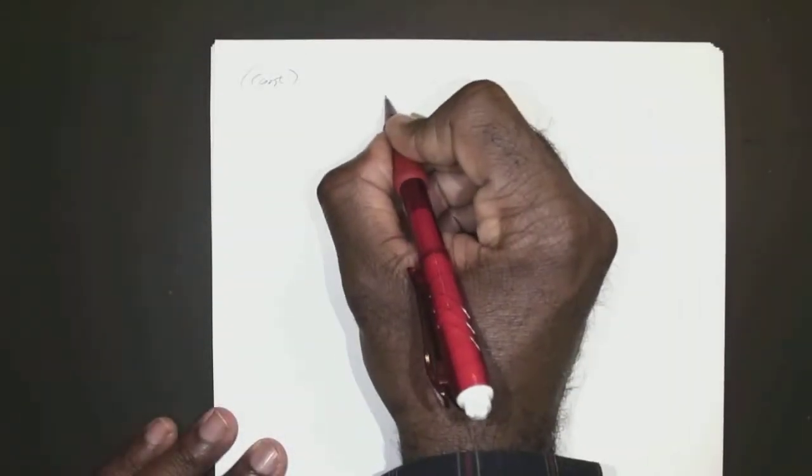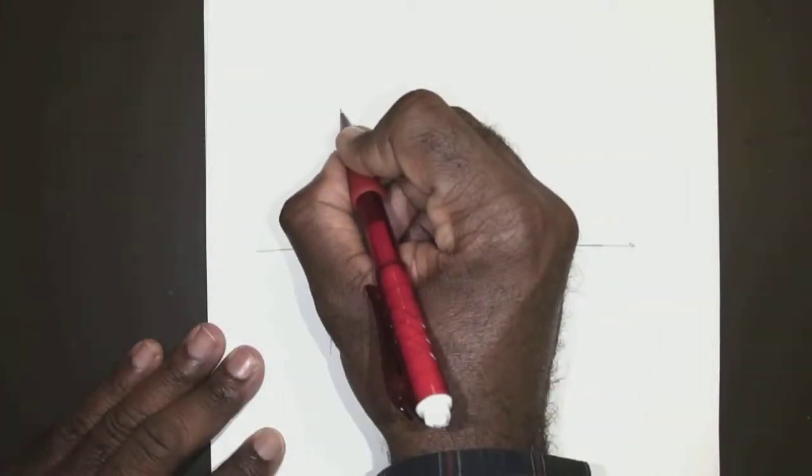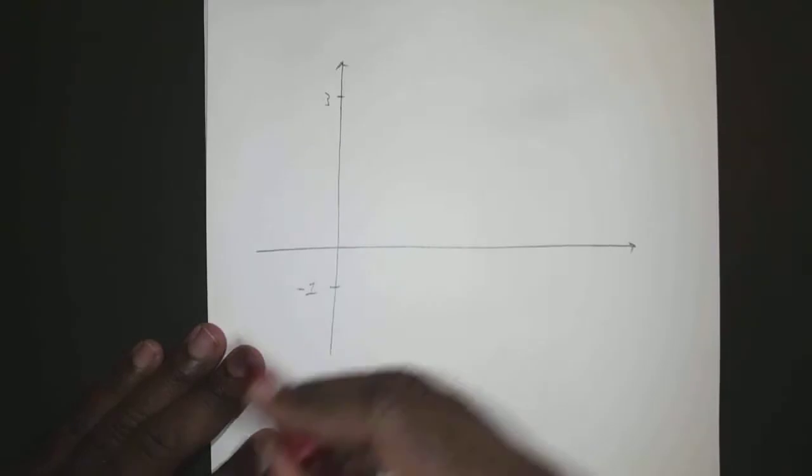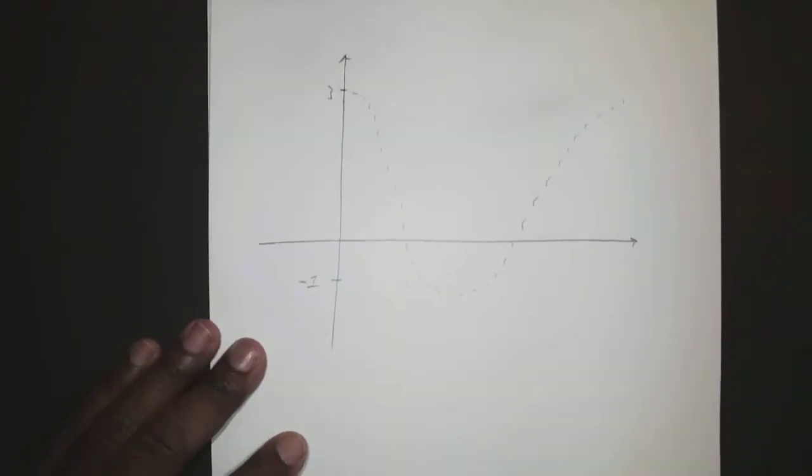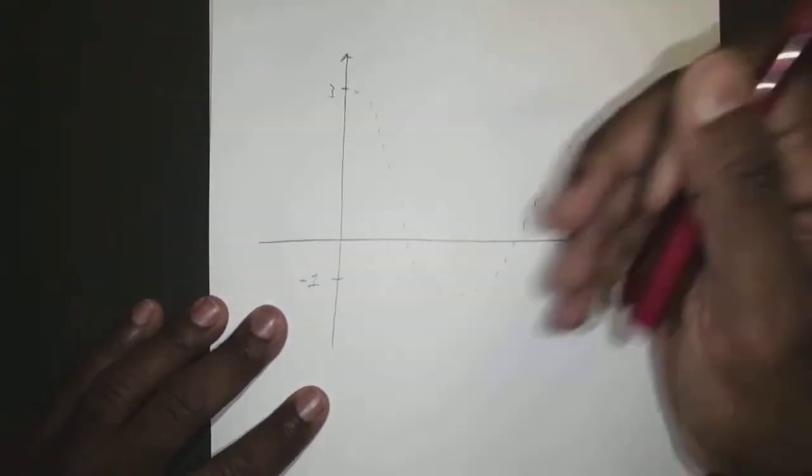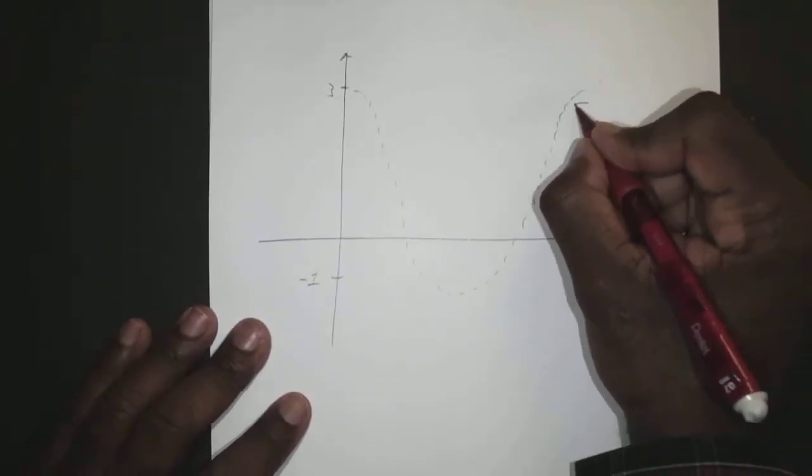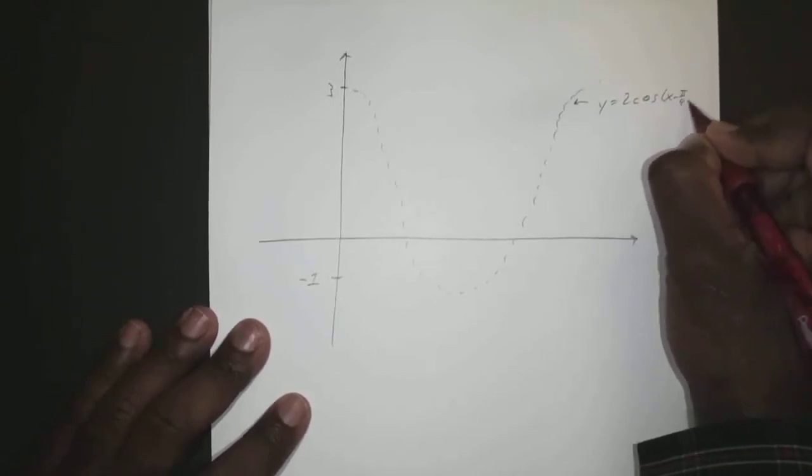So if we go ahead and graph it, I'll drop that down a little bit. We're going to need the space. We know it goes from 3 to negative 1, because we shifted it up. And it stretches down like that, give or take. Let me see if I can straighten it up a little bit. Good enough. So remember, this is our y equals 2 cosine of x minus pi over 4 plus 1.